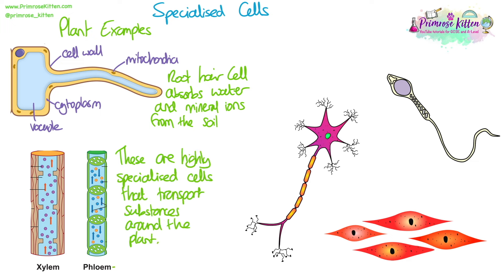Xylem and phloem are two other types of specialised cells in plants. They're highly specialised because they're very different from normal basic cells and they transport substances around the plant. Phloem transports sugars and amino acids, and xylem transports water.